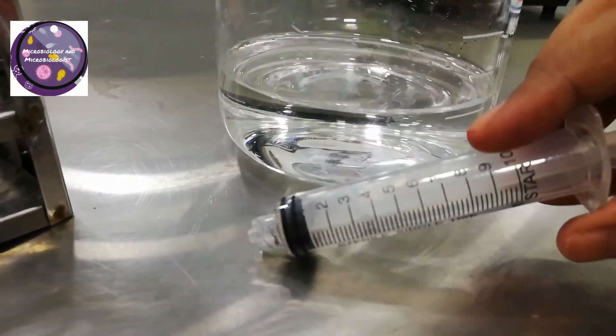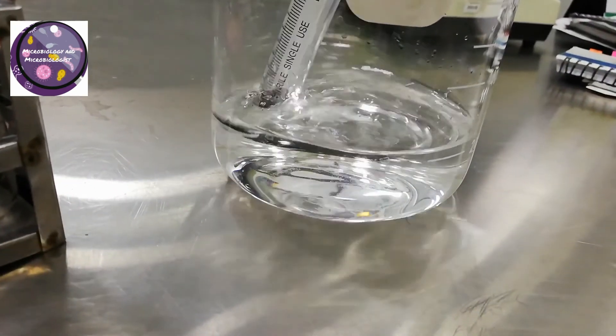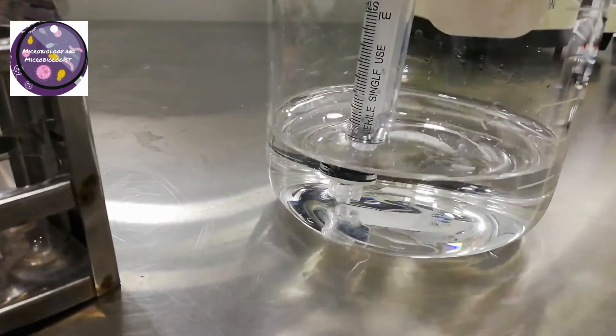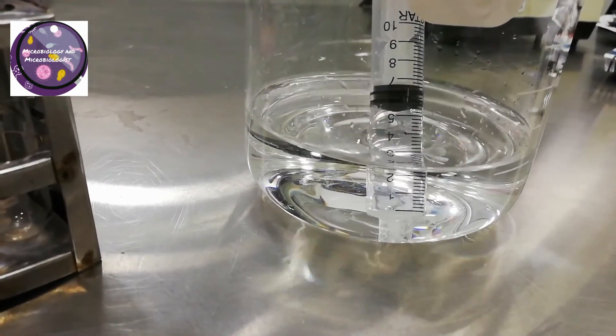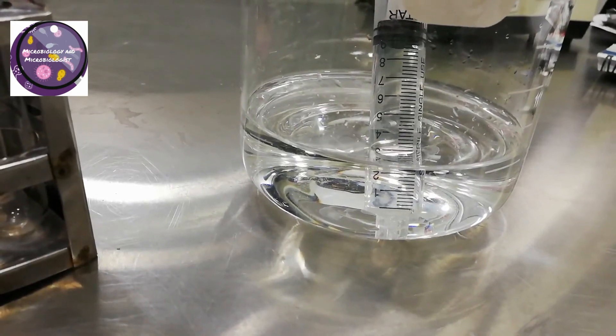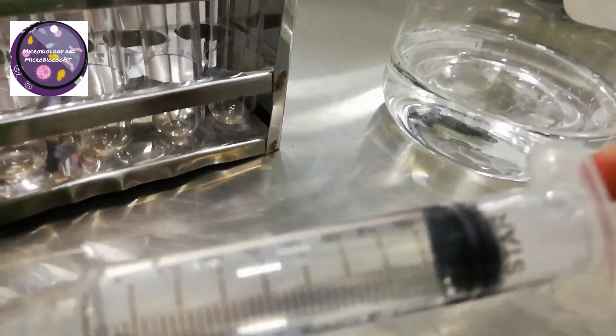Now I have mixed it properly, and I am going to use this 10ml syringe to dispense the liquid into these 15ml culture tubes.